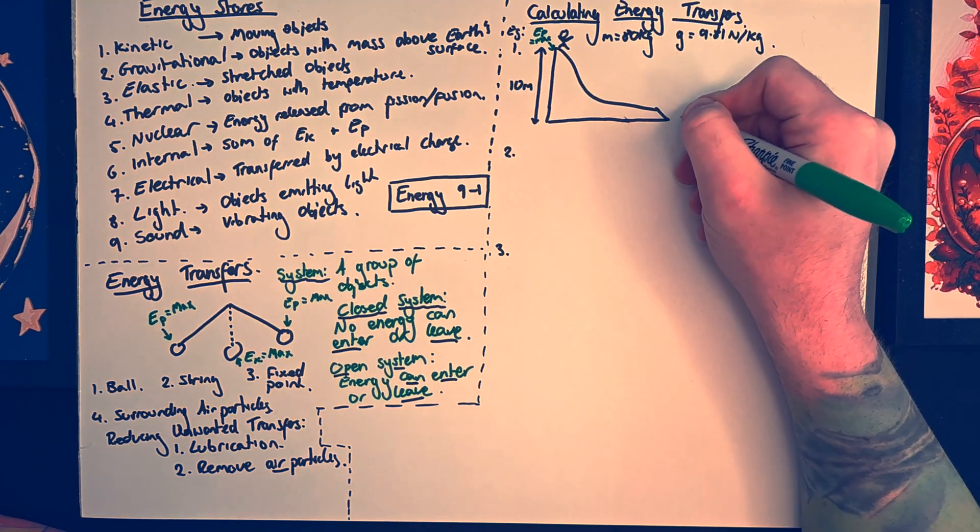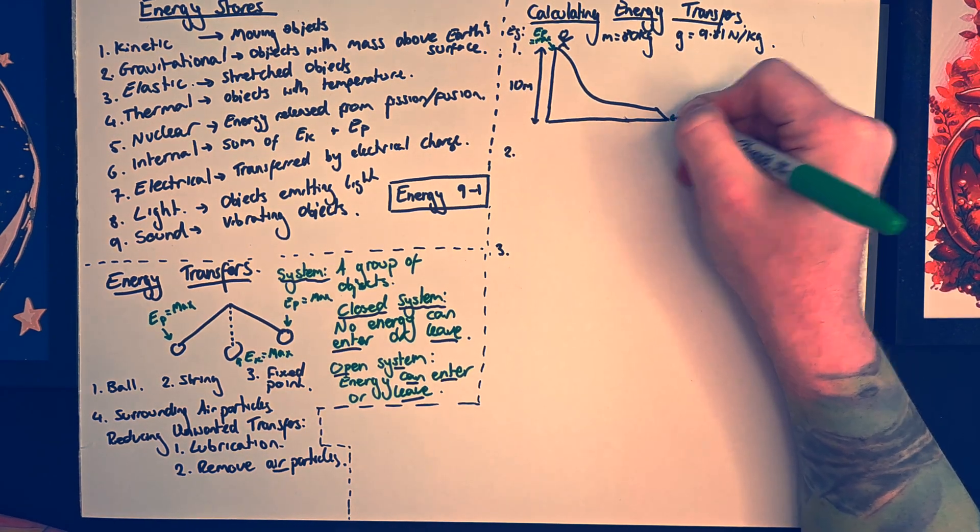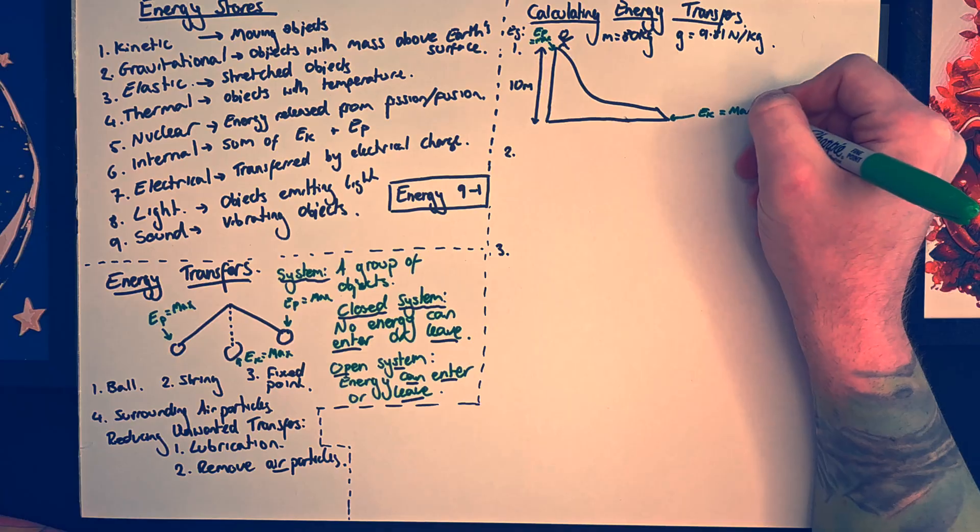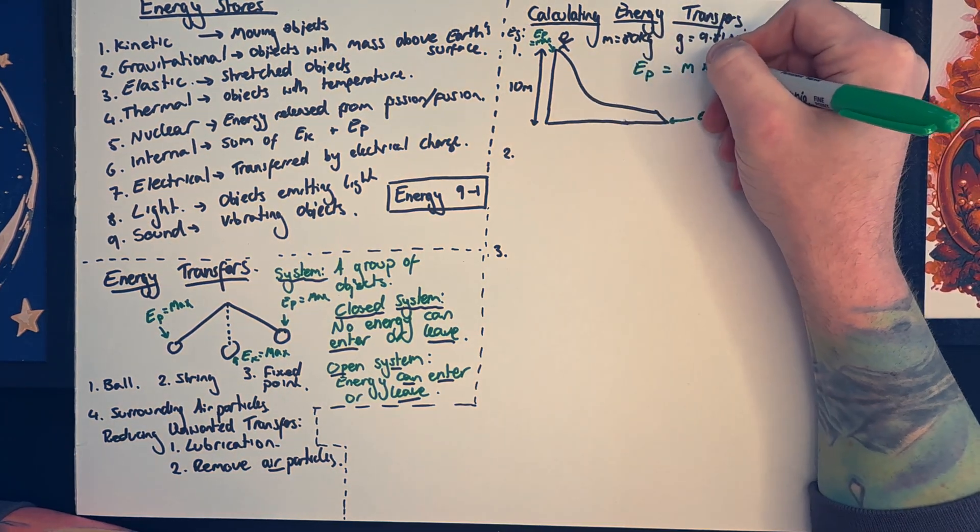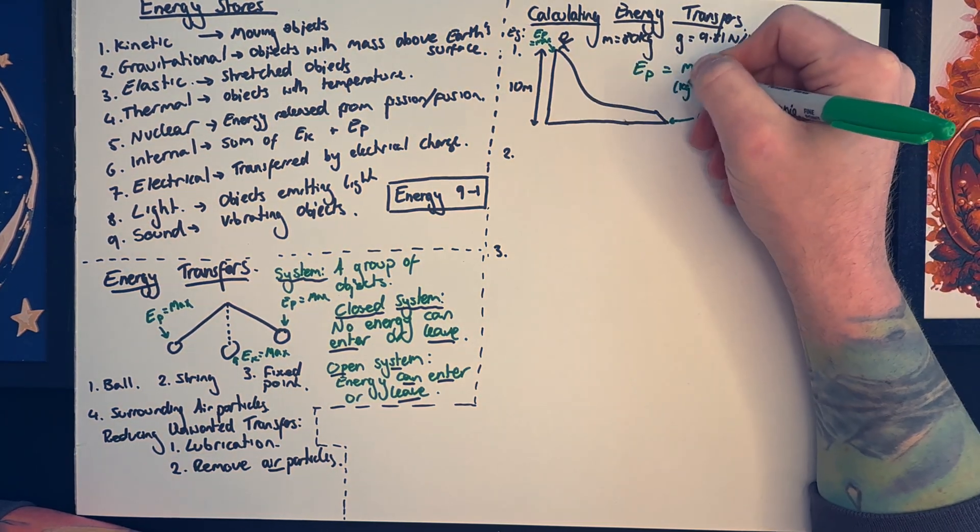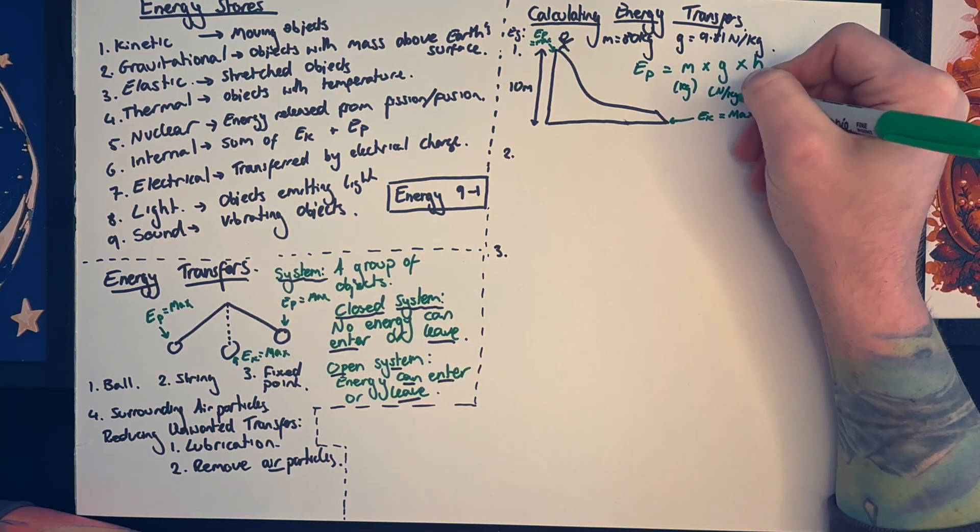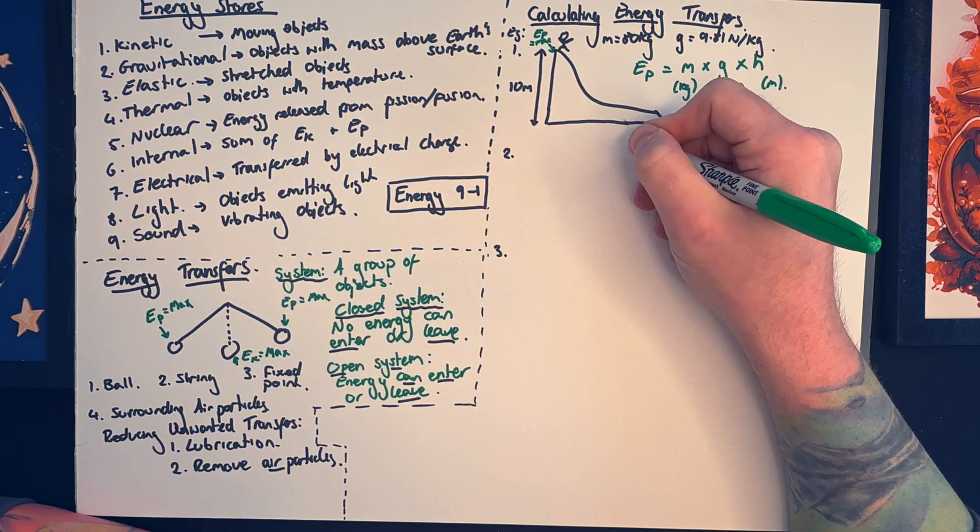So I've started off by naming the equation, and that is gravitational potential energy equals mass times gravity times height. And I've put the units underneath each of those. So the units for mass is always kilograms, gravity is newtons per kilogram, and height in meters.